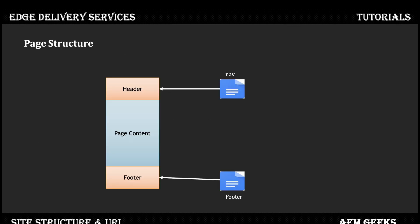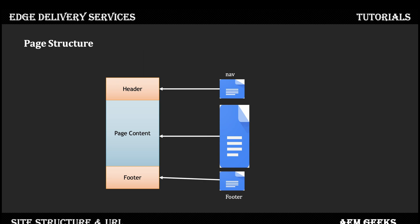How a page is structured: we have a document in Google Docs or SharePoint. Inside SharePoint, one document is for the header, one for the footer — that's standard. The main content of that page is rendered by one document. You can refer to a piece of another document inside your main document, but your main content is represented by one document.